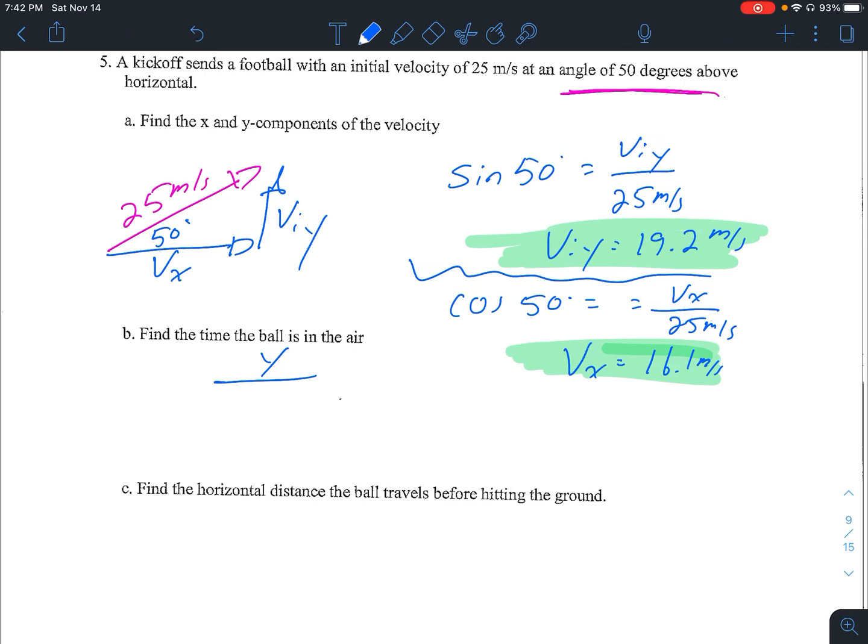So we know our initial velocity in the y direction is positive because it's up. And we actually know our final velocity in the y direction. It's going to be that same velocity just downward because whatever velocity it loses on the way up, it gains back down because the acceleration is constant at negative 9.8 meters per second squared. So since I have my two velocities, my acceleration, I'm looking for time.